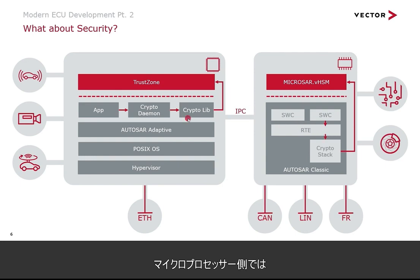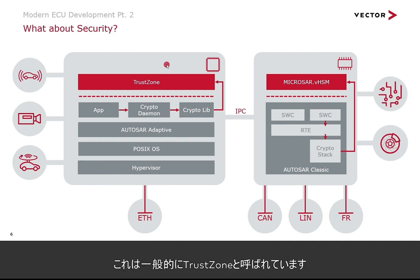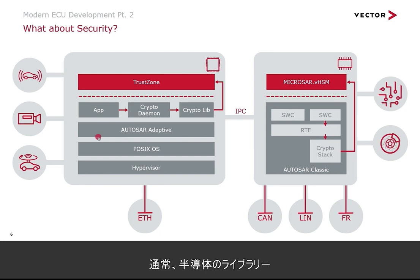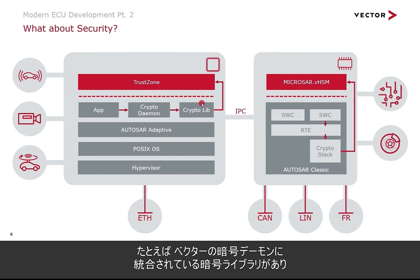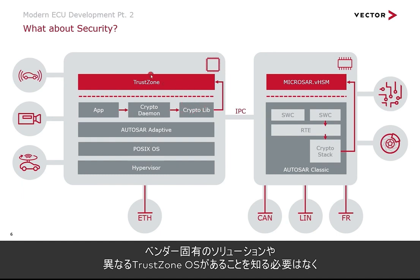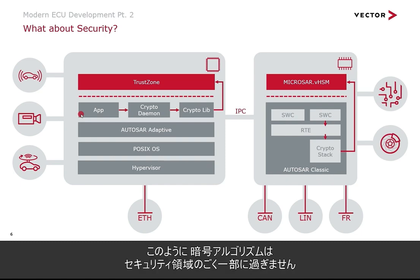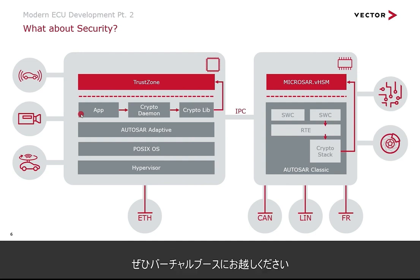On the microprocessor side, instead of a dedicated chip partition, you switch the mode of the full chip to a security mode — typically called TrustZone. To access TrustZone mode, there is normally a cryptographic library from the semiconductor vendor, which we integrate into our cryptographic daemon and expose to the application. Again, the application doesn't need to know about vendor-specific solutions or different TrustZone operating systems — it is implemented against one unified framework. Of course, cryptographic algorithms are just a very small part of the security domain. For more about secure boot or key handling, please visit us at our virtual booth.